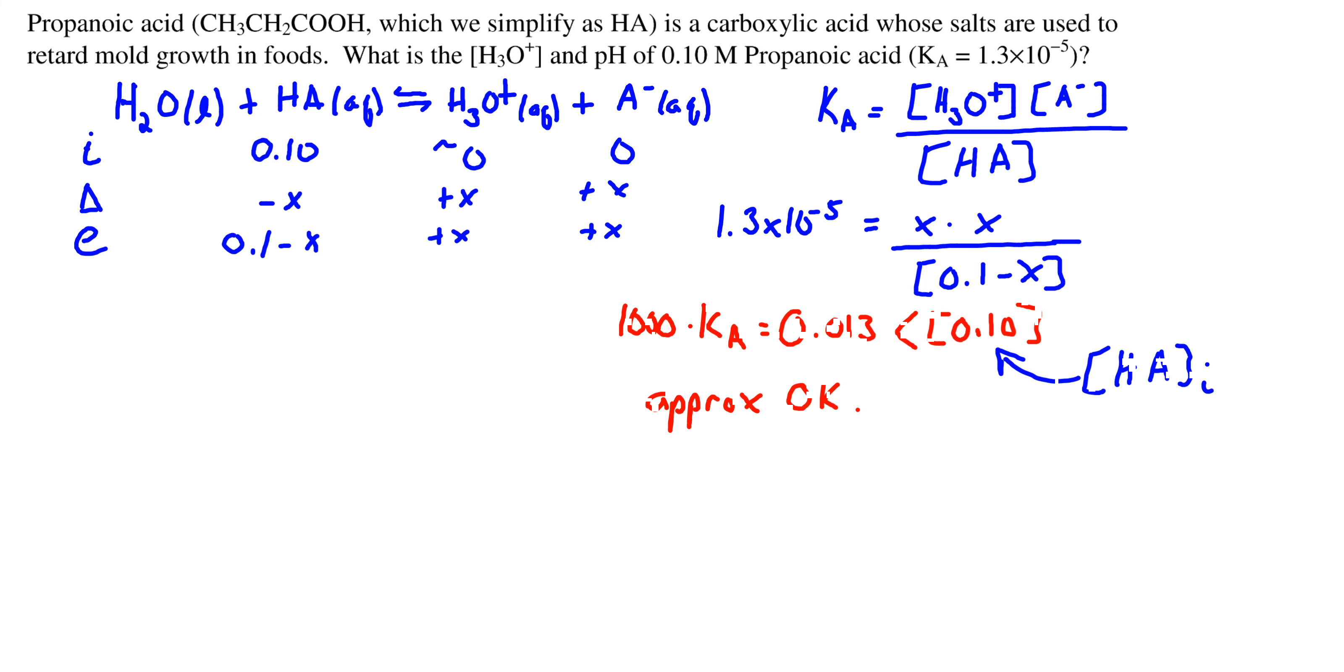To test whether we can make the simplifying approximation, we multiply our equilibrium constant by a thousand and compare it to the initial concentration of our acid, because we're trying to test whether this is negligible compared to our initial concentration.